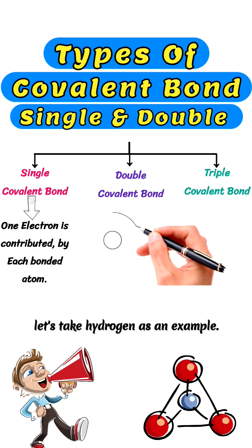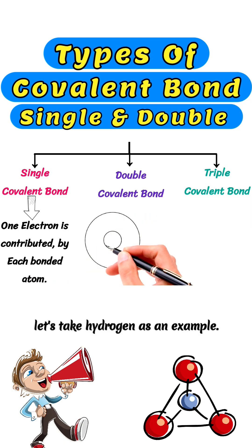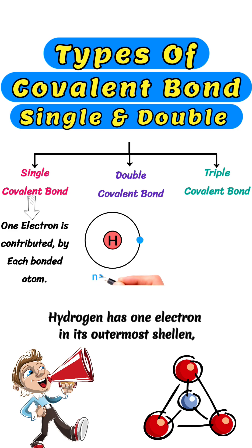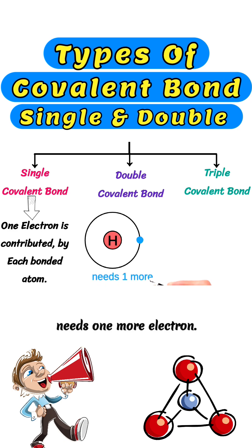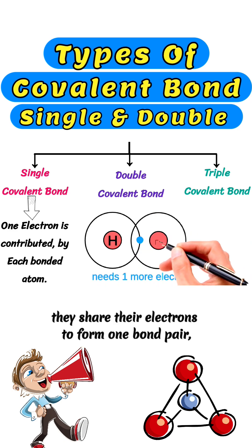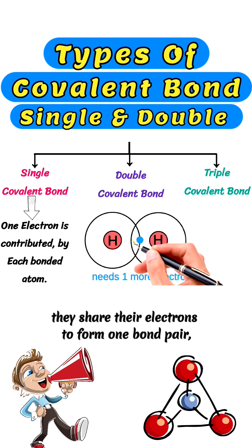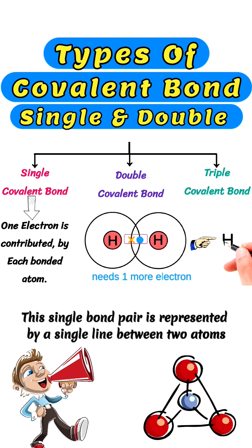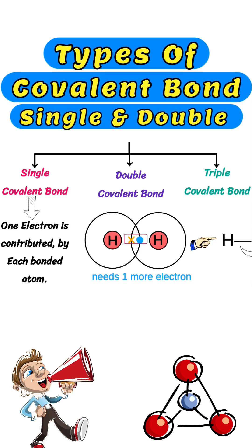Let's take hydrogen as an example. Hydrogen has one electron in its outermost shell and needs one more electron. When two hydrogen atoms come together, they share their electrons to form one bond pair, known as a single covalent bond. This single bond pair is represented by a single line between two atoms.